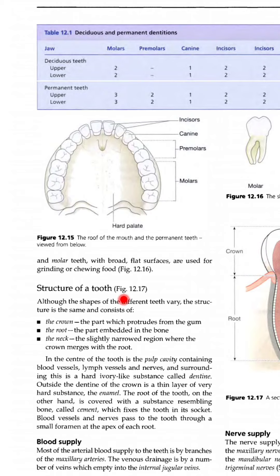Structure of a tooth: Although the shapes of different teeth vary, the structure is the same. जो teeth की shapes होती हैं — जैसे incisors, canine, premolars, molars — इनकी shape अलग-अलग होती है, but इनकी structure same है। हर एक tooth में crown होता है — the part which protrudes from the gum — crown वाला part वो होता है जो gum में से निकलता है।